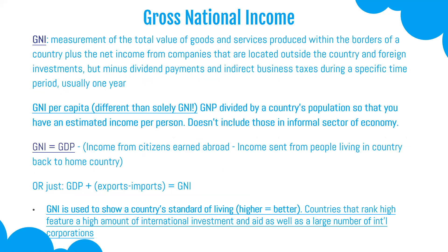GNI — Gross National Income — is the third economic measurement. It's the measurement of the total value of goods and services produced within a country's borders, plus net income from companies outside the country and foreign investments, minus dividend payments and business taxes. As human geographers, it's important to know the definition of GNI, but more importantly GNI per capita — GNI per person. Calculating GNI per capita is pretty easy: it's the GNP divided by the country's population, giving you an estimated income per person. Note that this does not include those in the informal sector of the economy.